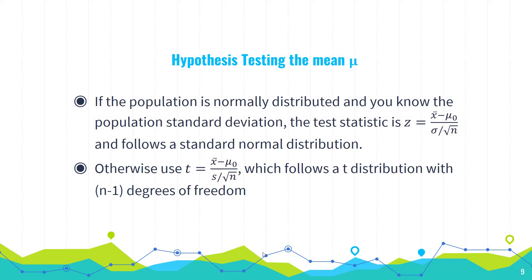What is our test statistic? It's going to be either a Z-statistic or a T-statistic — it'll either follow a normal distribution or a T-distribution. If the population is normally distributed and we know the population standard deviation, the test statistic will be a Z-statistic, found by a specific formula following a standard normal distribution. But we never really know the population standard deviation, so in practice we're going to use a T-statistic for hypothesis testing — using the sample standard deviation in the formula. That follows a T-distribution with N minus one degrees of freedom.